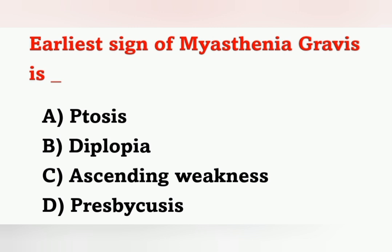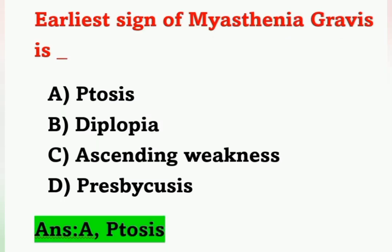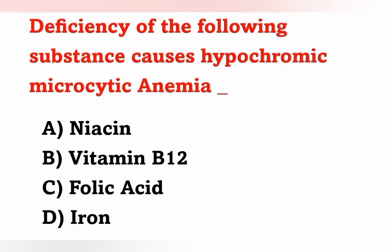Next question: Earliest sign of myasthenia gravis. Options: A) Ptosis, B) Diplopia, C) Ascending weakness, D) Psychosis. The earliest or first sign of myasthenia gravis is ptosis. Ptosis means drooping of the eyelid. Option A is the correct answer.